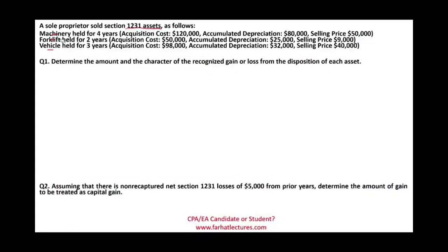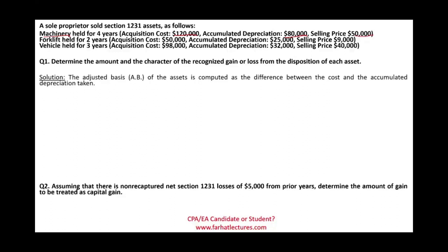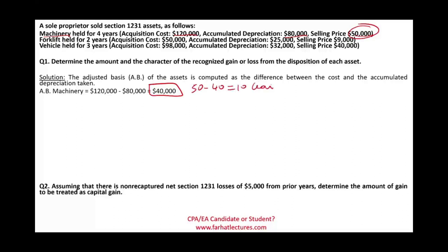The first thing you have to do is figure out the adjusted basis, because you are given the cost of the asset. The machinery was held for four years with a cost of $120,000 and accumulated depreciation of $80,000, giving an adjusted basis of $40,000. We sold it for $50,000. $50,000 minus $40,000 gives us a gain of $10,000.